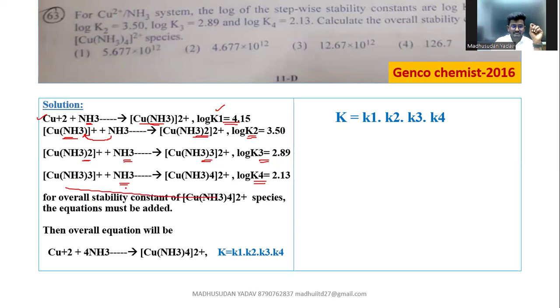Now if you add these equations, if you add all the four equations, when equations are added what happens? Equilibrium constants are multiplied. When equations are added, equilibrium constants are multiplied.